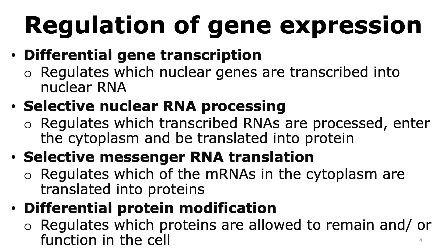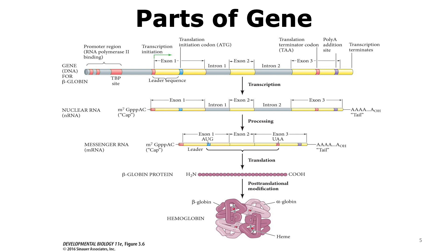Finally, another way of regulating gene expression is differential protein modification. A protein can sometimes have to be modified in order to remain functional, and hence we need these protein modifications — this is a way of regulating protein function. DNA codes for the information needed to synthesize a protein, and based on the central dogma, the DNA is first transcribed to an RNA molecule, which is then translated into a protein.